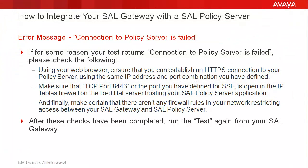If for some reason your test returns 'connection to policy server is failed,' please check the following. Using your web browser, ensure that you can establish an HTTPS connection to your policy server using the same IP address and port combination you have defined. Make sure that TCP port 8443, or the port you have defined for SSL, is open in the IP tables firewall on the Red Hat server hosting your SEL policy server application. And finally, make certain that there aren't any firewall rules in your network restricting access between your SEL gateway and SEL policy server. After these checks have been completed, run the test again from your SEL gateway.